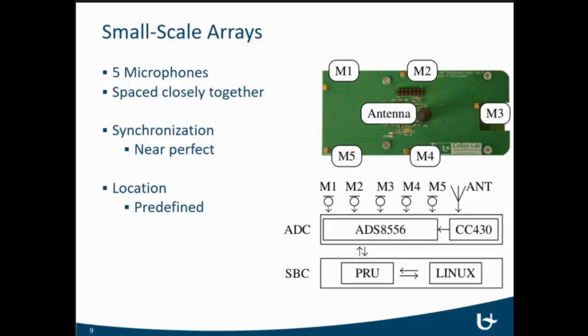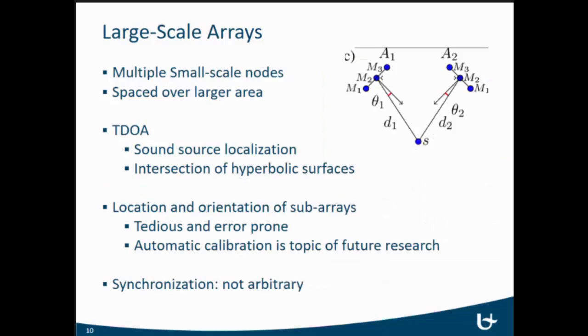We have five microphones, and then we also have an antenna. The antenna is used for the synchronization in the large-scale array, which I will explain in a second. For the large-scale array, we combine multiple of these small-scale nodes and we place them around the room, in the forest, some larger area. And then we can use time difference of arrival to get the sound source location.